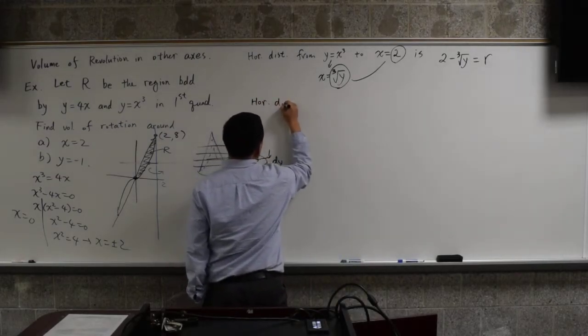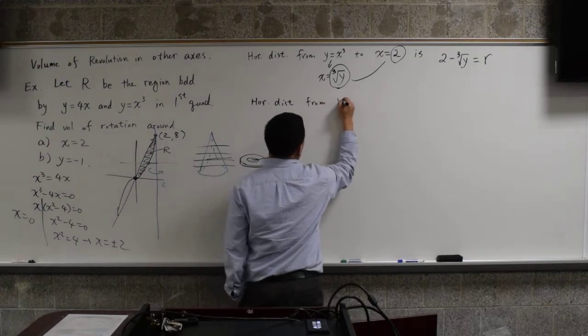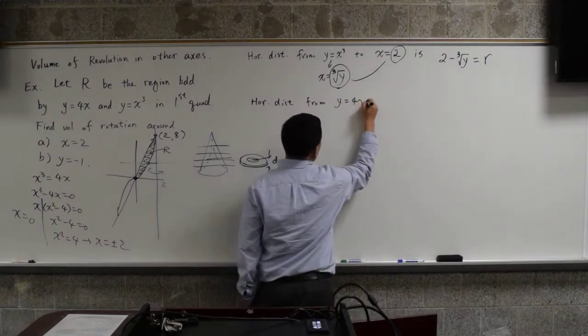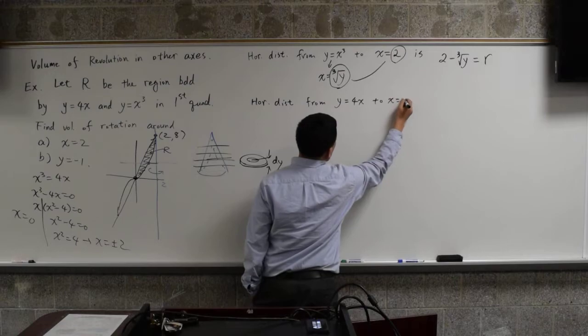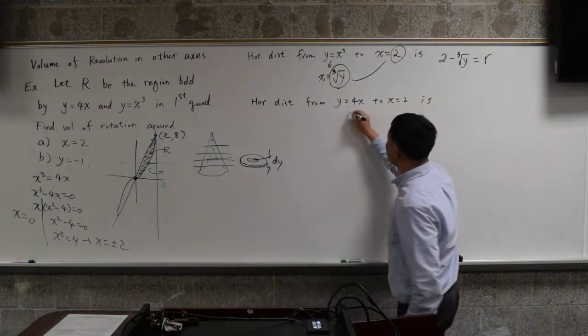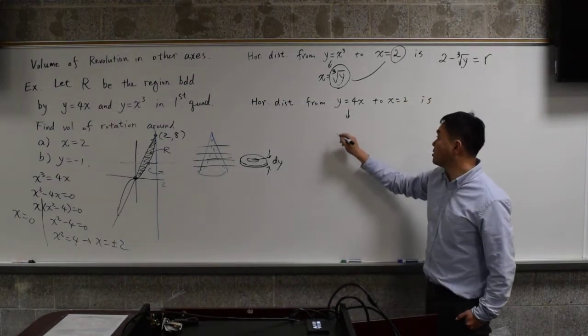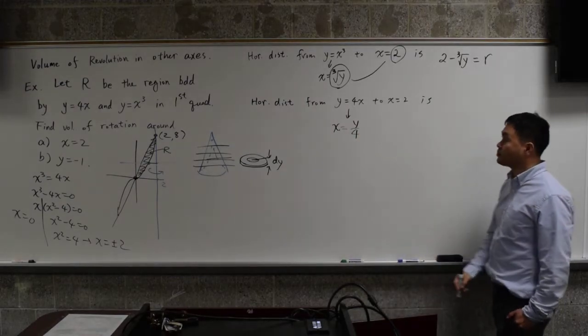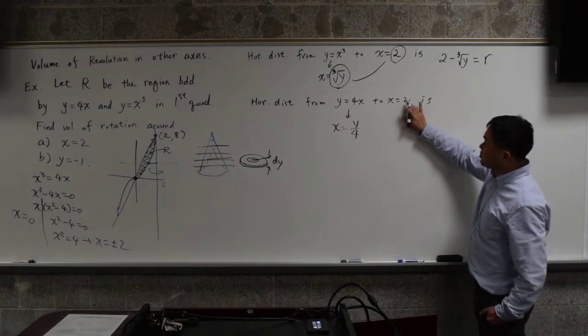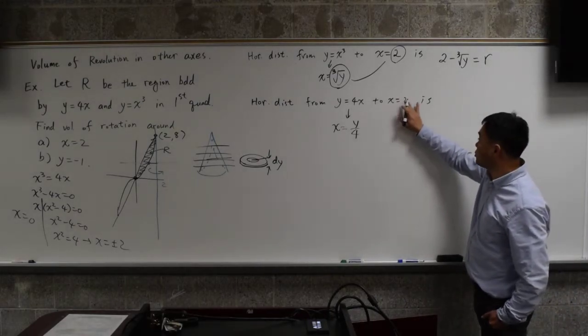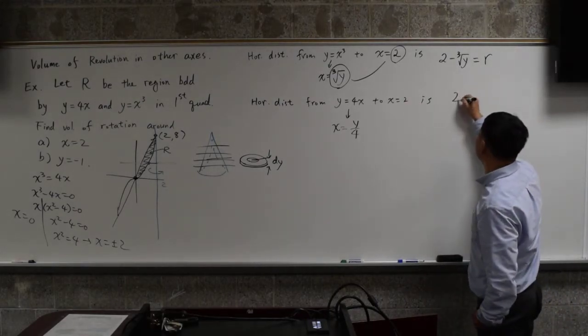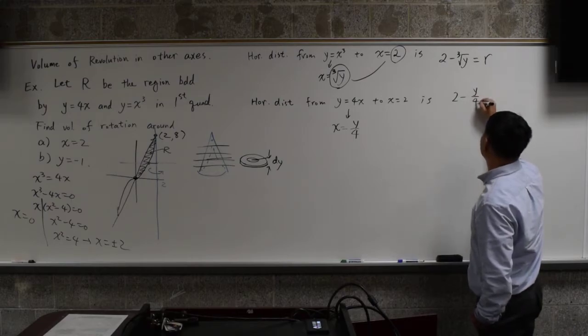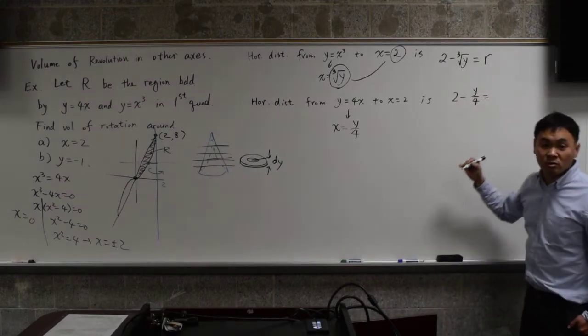Horizontal distance from y equals 4x to x equals 2 is... Once again, you solve for x. So x is y over 4. And now you do big minus small, 2 minus y over 4. And that is equal to big R.